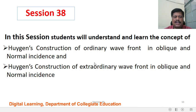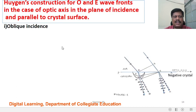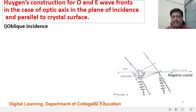We will now start session number 38. In this session, students will understand and learn the concept of Huygens' construction of ordinary wavefront in oblique and normal incidence, and Huygens' construction of extraordinary wavefront in oblique and normal incidence. First, we will discuss oblique incidence — specifically the case of Huygens' construction for O-ray and E-ray wavefronts, with the optic axis in the plane of incidence and parallel to the crystal surface.